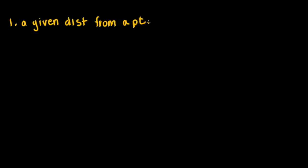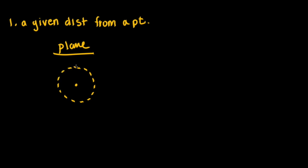The first of the famous five is a given distance from a point. In a plane, the locus of points is going to be equidistant from the original point. If we go all the way around our given point, we can see that this makes a circle. So a given distance from a point in a plane is a circle.